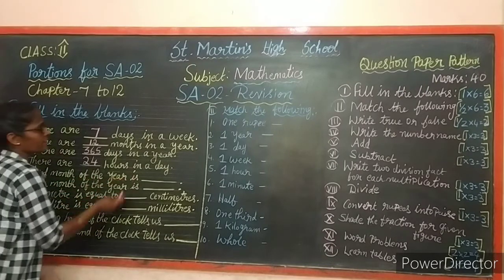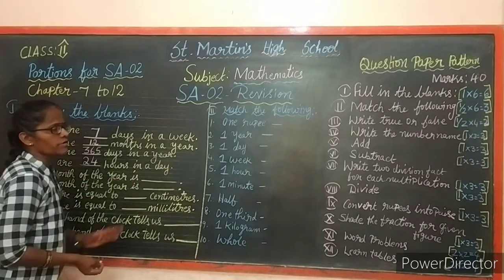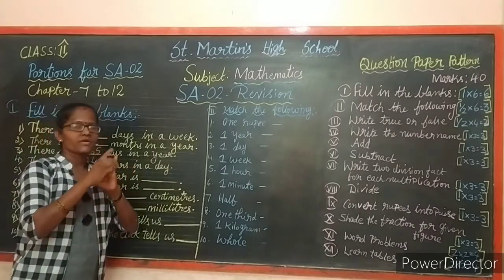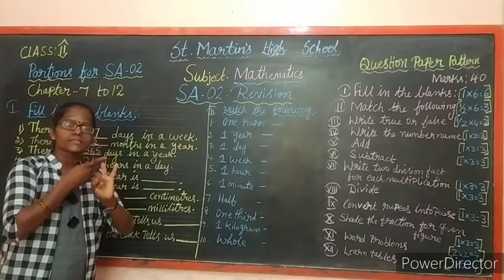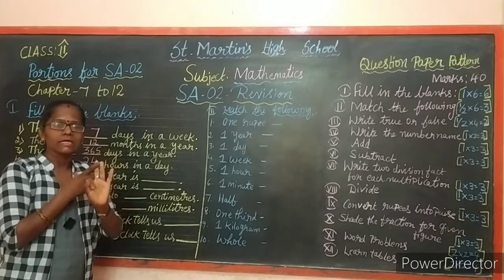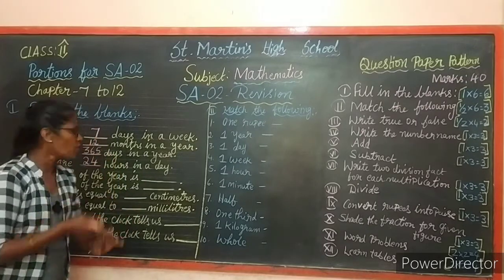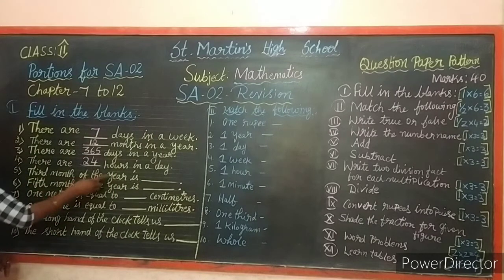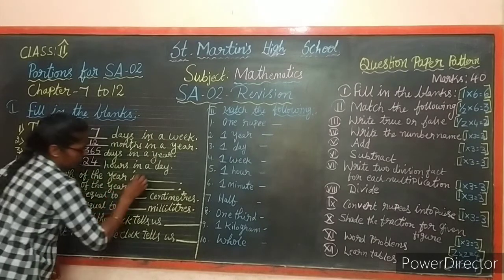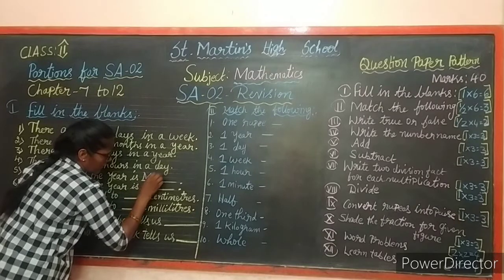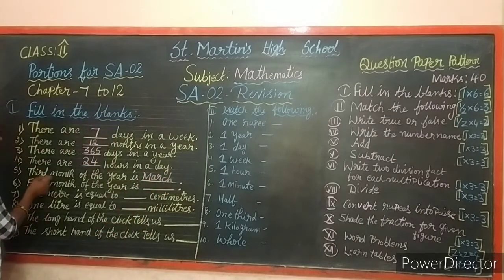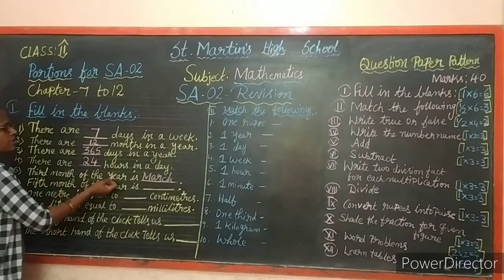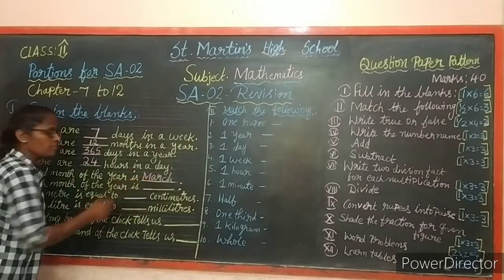Next: the third month of the year is dash. You can count - January is the first month, February is the second month, March is the third month. So the third month of the year is March.